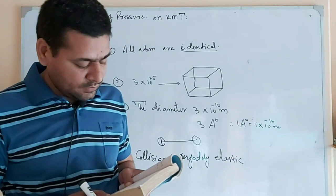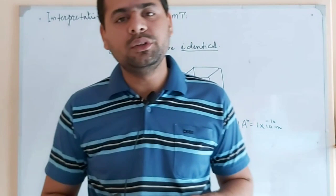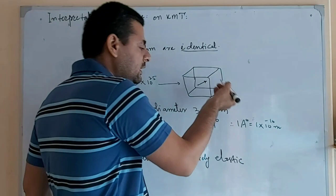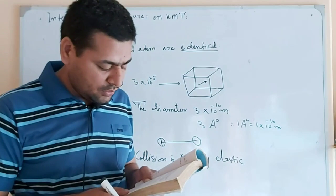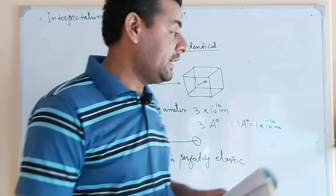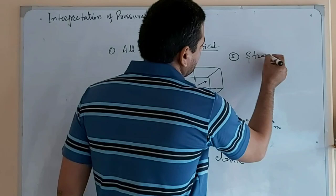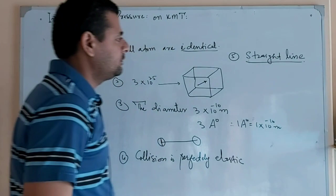Fifth postulate of KMT: molecules exert no force on one another except during collision. Therefore, in between collisions with other molecules or with the walls of the container, and in absence of external forces, they move freely in a straight line.